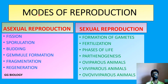The modes of reproduction can be divided into two types: asexual reproduction and sexual reproduction. Under asexual reproduction we have the following six types: fission, sporulation, budding, gemmule formation, fragmentation, and regeneration. We will be discussing fission today, and the remaining topics will be covered in future videos.